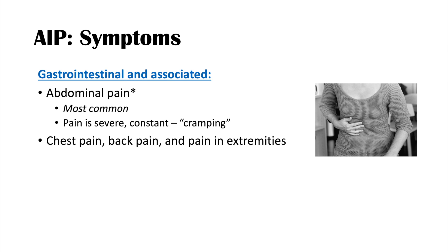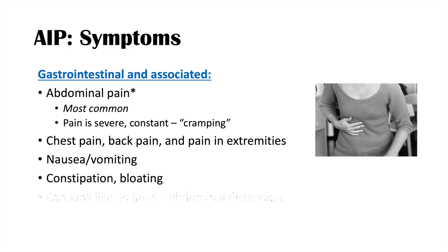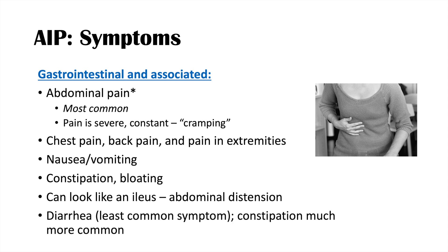There can also be chest pain, back pain, and pain in the extremities, as well as nausea and vomiting, constipation, and bloating. AIP can look like an ileus, so you can get abdominal distension. Diarrhea is the least common symptom, and comparing prevalence, constipation is much more common than diarrhea.